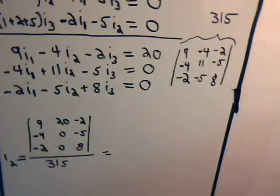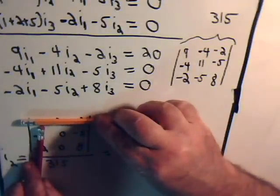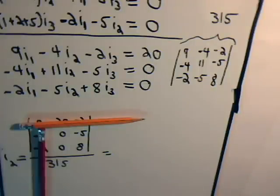So let's see what we have. Here, it's going to be 9 times this sub-determinant, and we've got these two zeros again, which makes that 0. 8 times 0, and then we have minus 5 times 0.